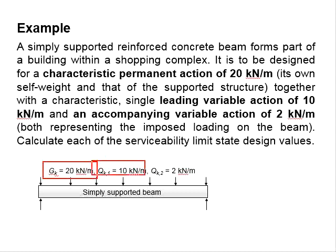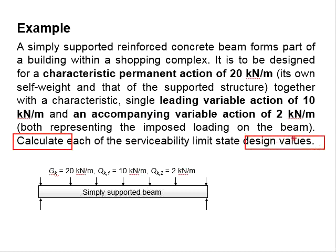leading variable actions of 10 kN per meter and accompanying variables of 2 kN per meter at the serviceability limit state. The question asks us to calculate the design value for the combination, frequent, and quasi-permanent conditions. You may pause the video to work out the solution.